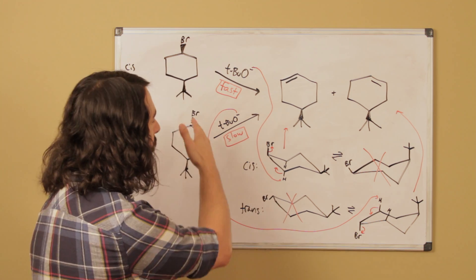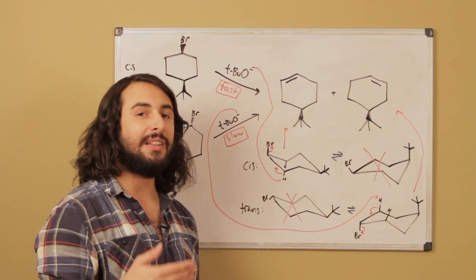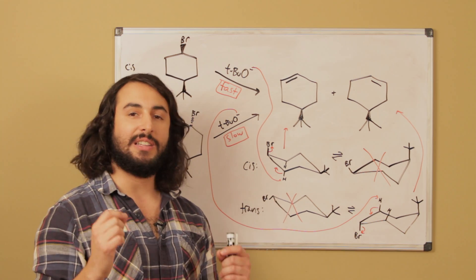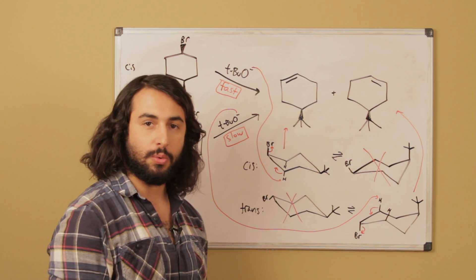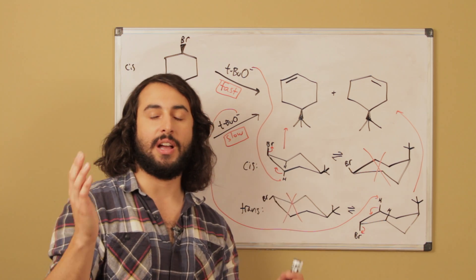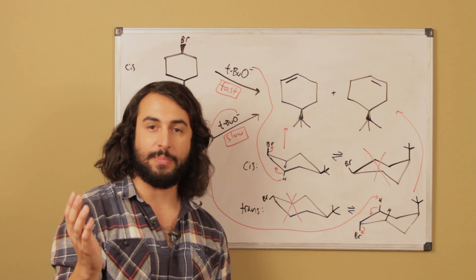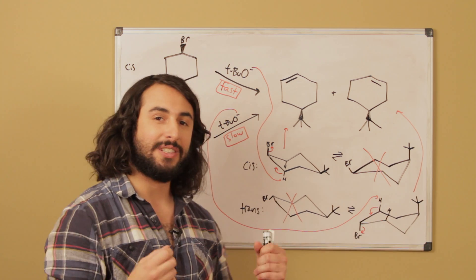And so that means tert-butoxide might collide with a molecule of substrate a million times before it finally finds one that is in the correct conformation for elimination to occur, because it is going to have to overcome that overwhelming energetic unfavorability to do the chair flip and get into this position, because the tert-butyl group does not want to be in the axial position - there's too many diaxial interactions.